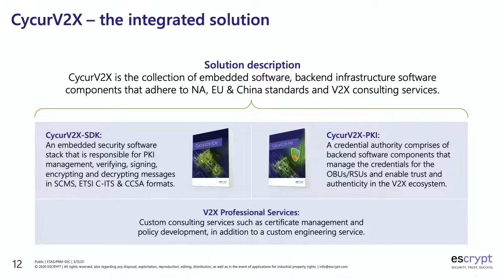The embedded software communicates with the back end to download certificates, enroll devices, revoke devices, and so forth. The second product line is the SaKa V2X PKI — public key infrastructure — a credential authority comprising back-end software components that manage credentials of on-board units (OBUs) and roadside units (RSUs), enabling trust and authenticity in the entire V2X system. An OBU can be an ECU inside the car or an aftermarket device plugged into your vehicle. RSUs are plugged into traffic controllers to enable V2X communication with the surrounding environment.